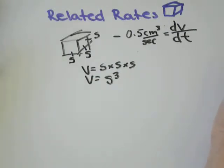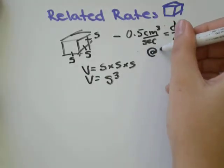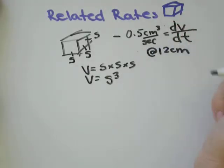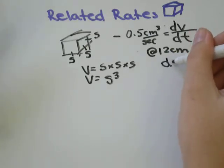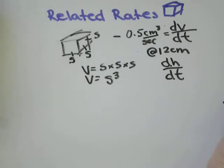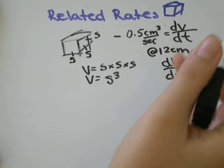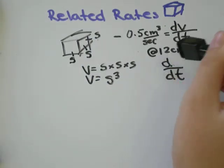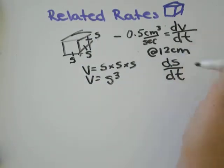We're also told that the length of the side is 12 centimeters, and we're asked what is the rate of change of the side length when the length is 12 centimeters. So at 12 centimeters, we want to know the change in height with respect to the change in time. The change in height, we said that height is equal to s, so I'm just going to write ds dt instead of dh dt.